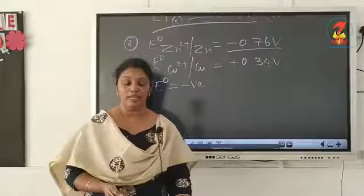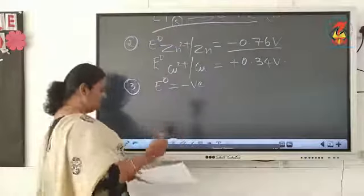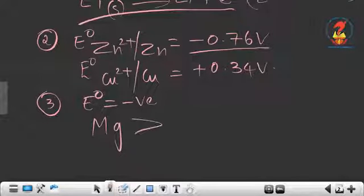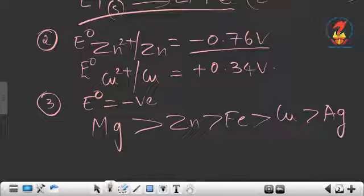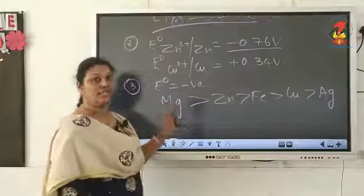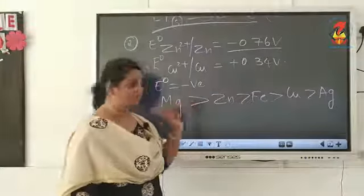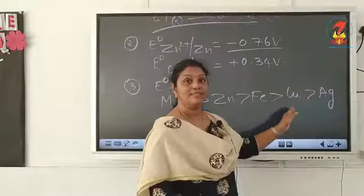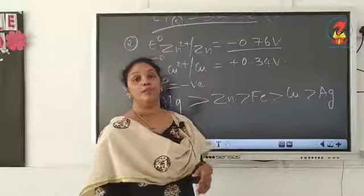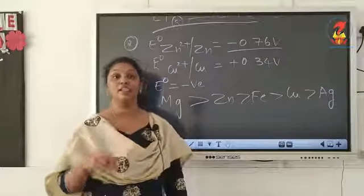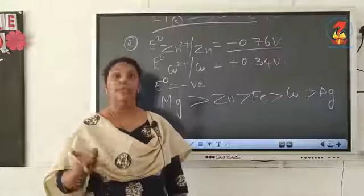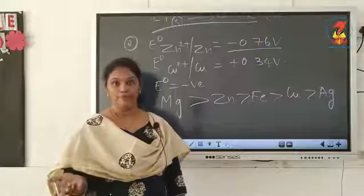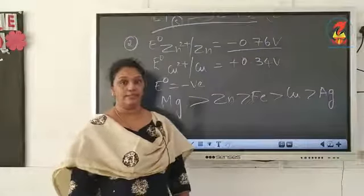For example, given elements magnesium, aluminium, zinc, iron, copper, and silver — the decreasing order of reactivity is: magnesium > zinc (E° = −0.76 V) > iron > copper (E° = +0.34 V) > silver (E° = +0.80 V). Magnesium is most reactive because it has the maximum negative E° value. Elements with more negative E° values are highly reactive and get oxidized easily by losing electrons.